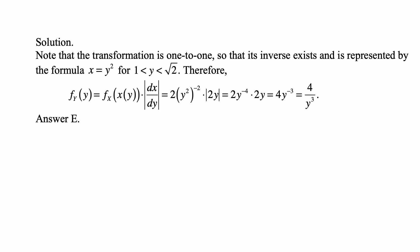f_Y(y) = f_X(x(y)) times |dx/dy|, and that's equal to 2(y^2)^(-2) times |2y| = 2y^(-4) times 2y, because the derivative of y squared is 2y.